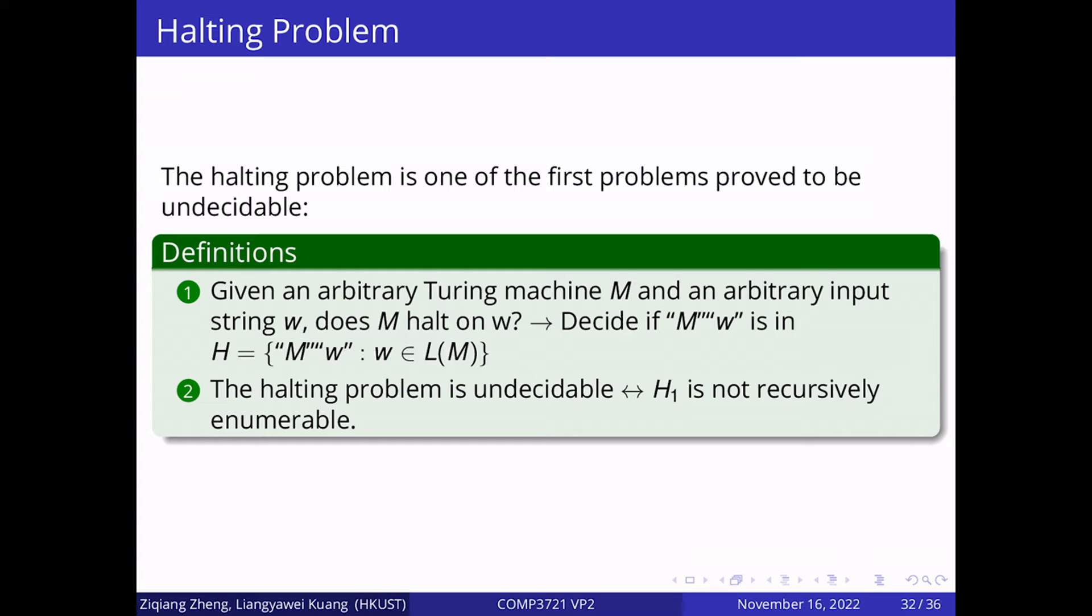We then talk about the halting problem, which is one of the first problems that have been proved to be undecidable. Given an arbitrary Turing machine M and the string W, we need to answer whether M halts on W. To answer this question, we can instead decide whether the encoding MW is in a certain language. Under the case of halting problem, we need to prove the language H is not recursive.